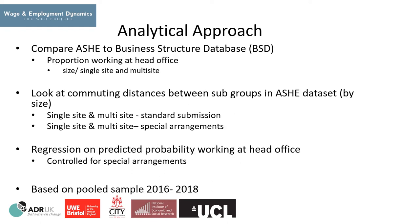In order to explore this issue we took a three-step approach. First, we compared the proportion of head office employment to the Business Structure Database. The BSD contains a small number of variables such as employment, turnover, and census output area for almost all business organisations in the UK, and is derived primarily from the inter-departmental business register. The three main data sources are value-added tax, pay-as-you-earn records from HMRC, and ONS business surveys. As such, we believed this was a good benchmark from which to analyse the ASH. Second, we looked at the difference between groups in ASH — single-site and multi-site employers using standard paper submissions versus special electronic arrangements. Third, we ran basic regressions on the probability of working at the head office, controlling for special arrangements.